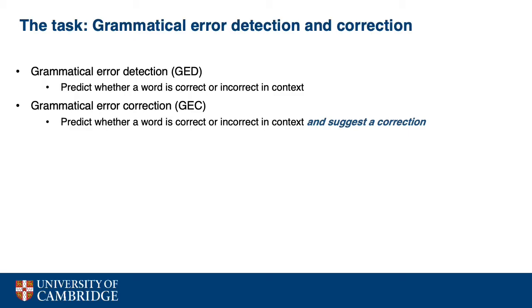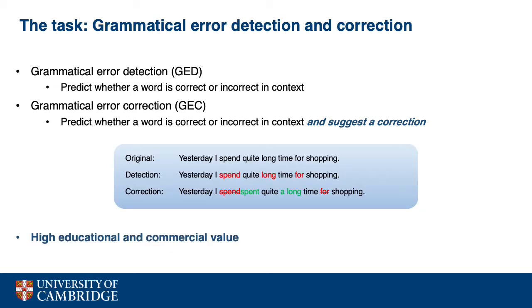Let's first look at the task. What is grammatical error detection and correction? Grammatical error detection is the task of predicting whether a word is correct or incorrect in context. As we can see in this example: 'yesterday I spent quite a long time for shopping.' A GED system should be able to identify any incorrect usage of words like 'spent', 'long', and 'for' in this sentence.